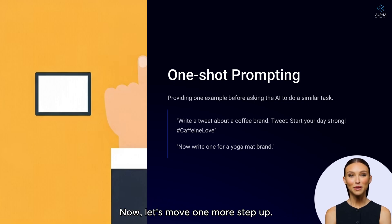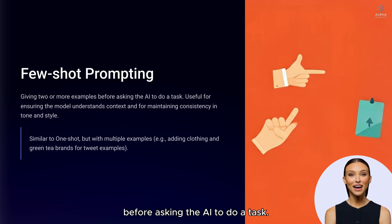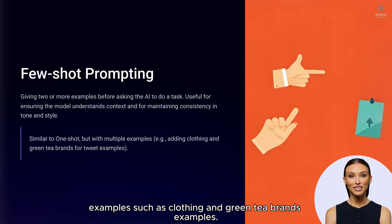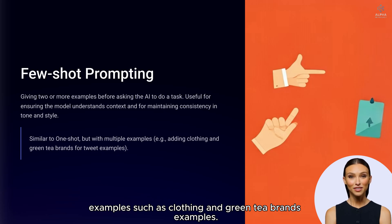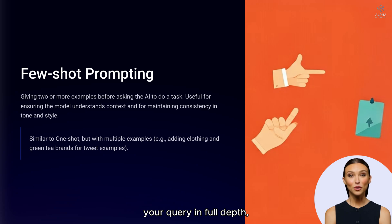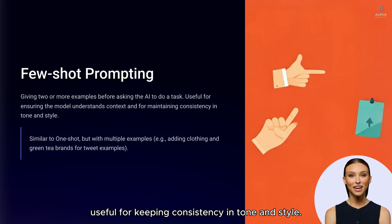Let's move one more step up — few-shot prompting. This is when you give two or more examples before asking the AI to do a task. For instance, you would also add other brand examples, such as clothing and green tea brands. This is a great method when you need to make sure the model understands your query in full depth, context, and essence, and is also very useful for keeping consistency in tone and style.